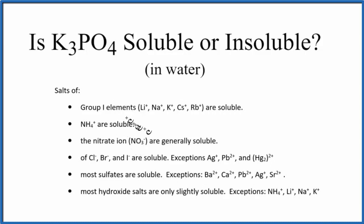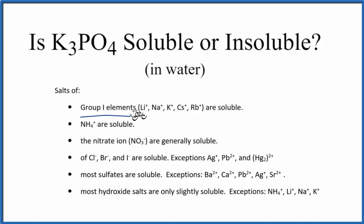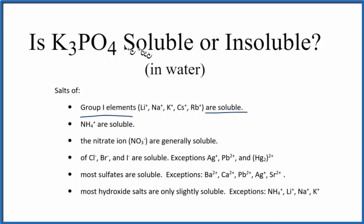As we look at the solubility rules — this is a brief set of them — we have Group 1 elements. Potassium is in Group 1. So when potassium forms a bond with PO4, we're going to have a compound that is soluble. According to our solubility rules, K3PO4 is soluble in water.